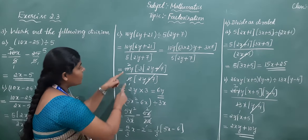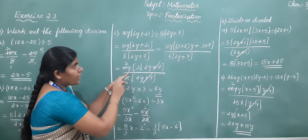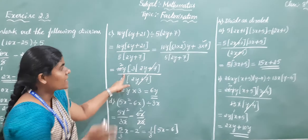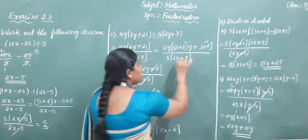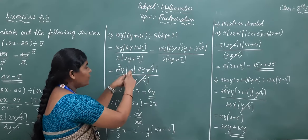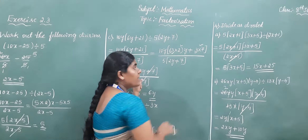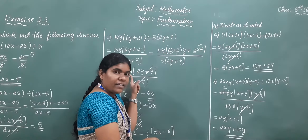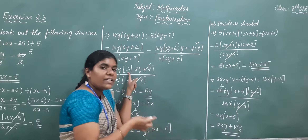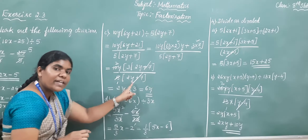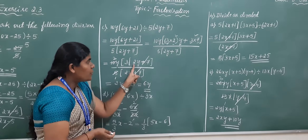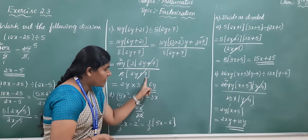Next step — observe carefully. In both the first and second terms, 3 is common. Take 3 outside the bracket. So we have: 10y into 3 into (2y plus 7) divided by 5 into (2y plus 7). In the numerator and denominator, 2y plus 7 is present. You cancel 2y plus 7 with 2y plus 7.